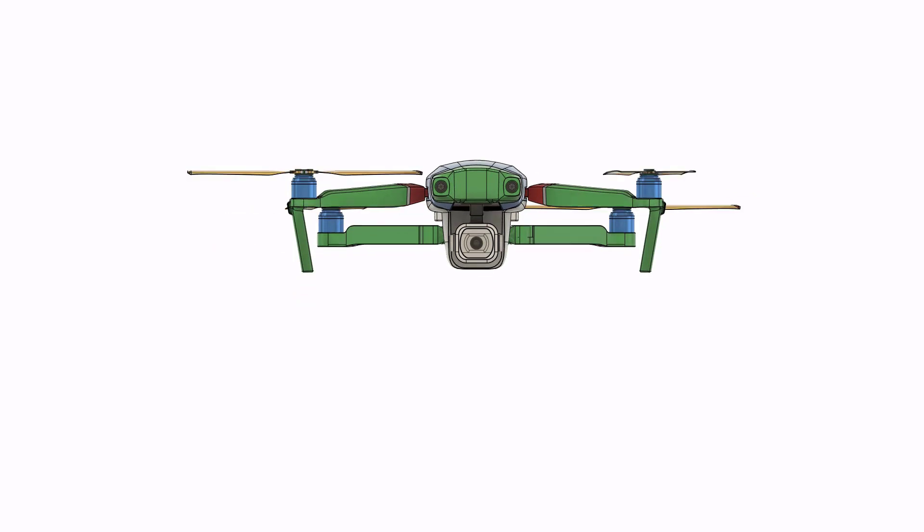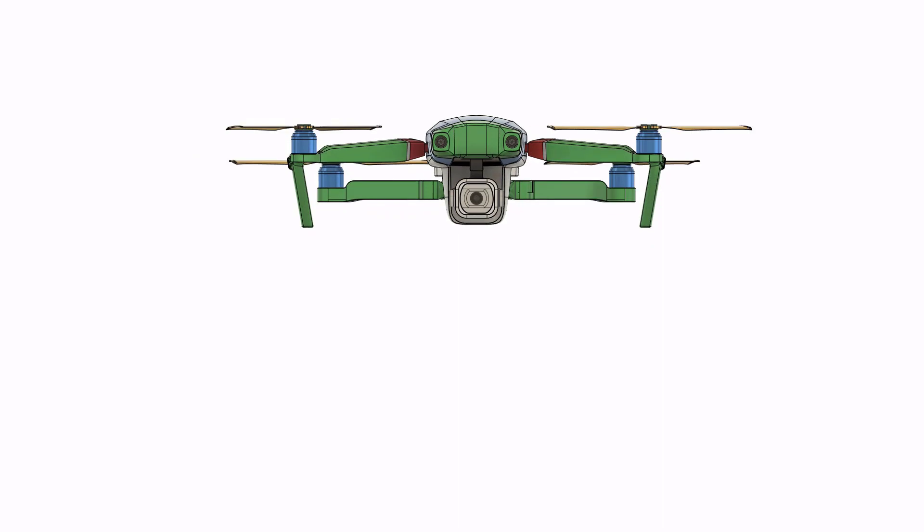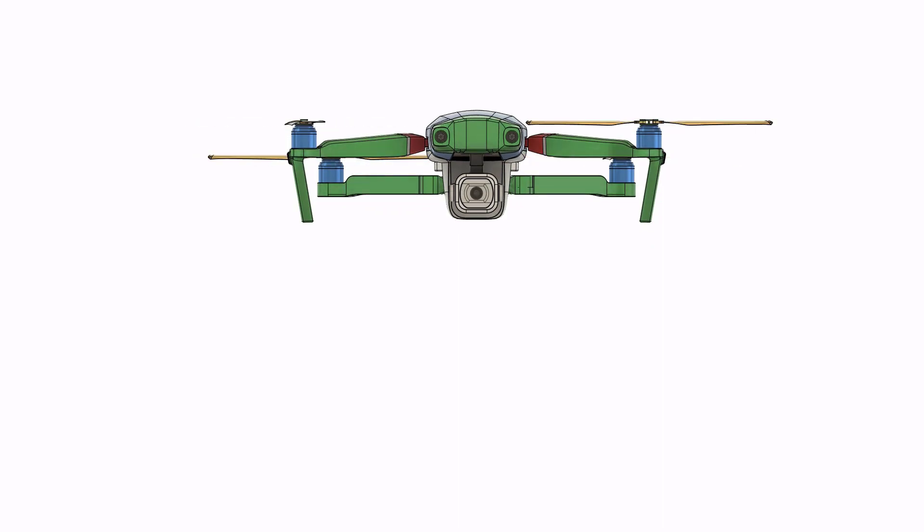For example, a quadcopter with four propellers, each generating 10 newtons of thrust, would have a total thrust of 40 newtons. The combined thrust of four rotors should be equal to the weight of the quadcopter to maintain altitude and should be greater to become airborne and increase altitude.